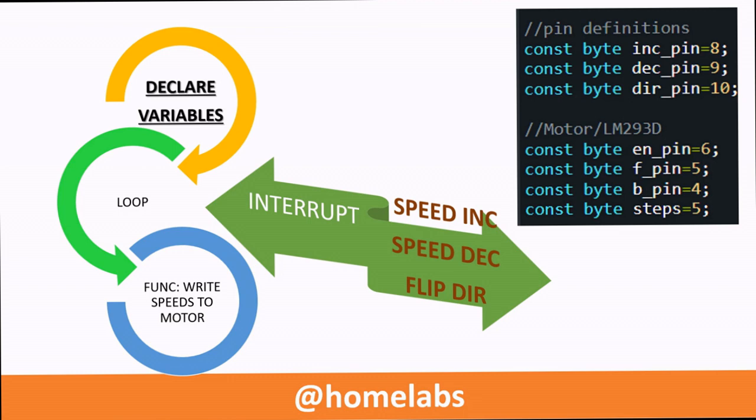Similarly, pin 10 is also configured to watch for interrupts and in case an interrupt is triggered on this pin, then the direction is changed from forward to backward subject to the speed being 0.